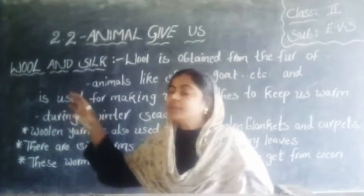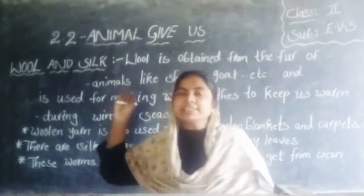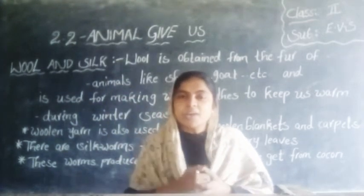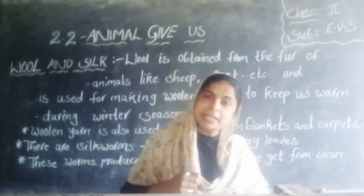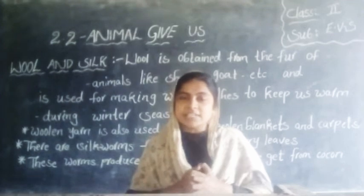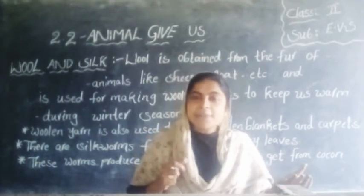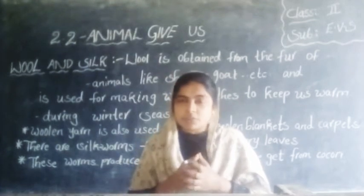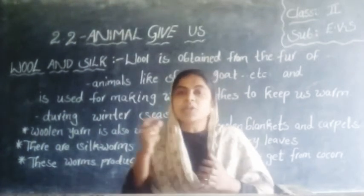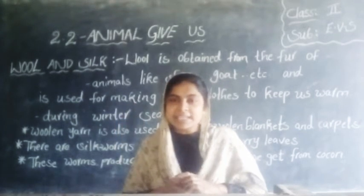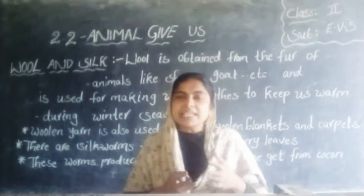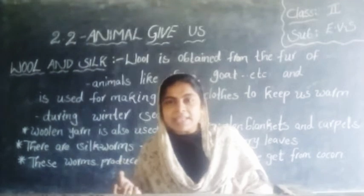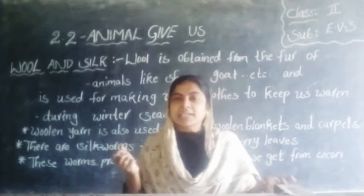Today we will discuss wool and silk. Wool is obtained from animals like goat and sheep. Sheep and goat are used to make woolen clothes to keep us warm during the winter season. Wool is also used to make woolen carpets.